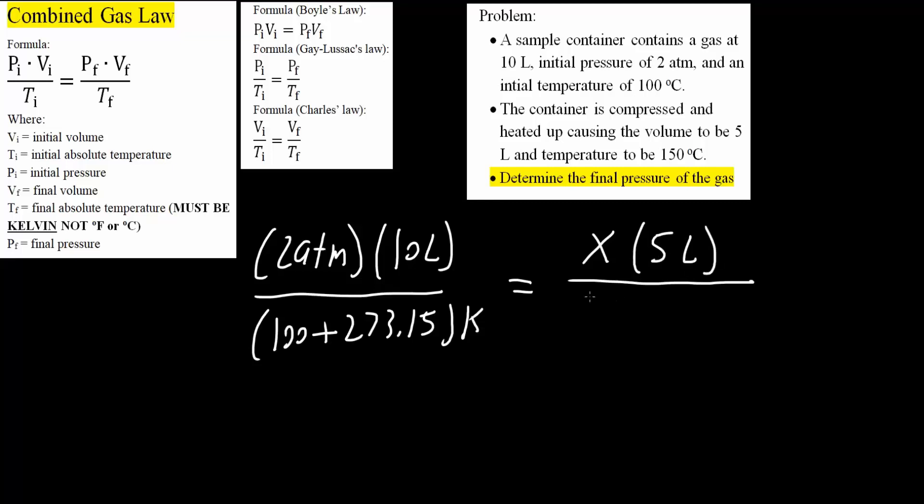We know final temperature is 150 degrees Celsius, which again, we need to convert to Kelvin, absolute temperature. We get 150 plus 273.15. And so, this now becomes Kelvin.